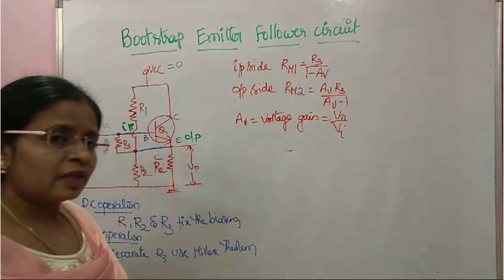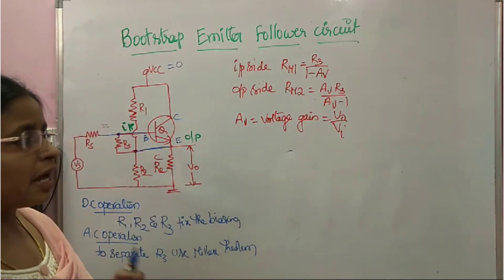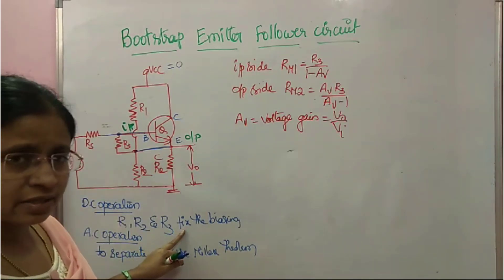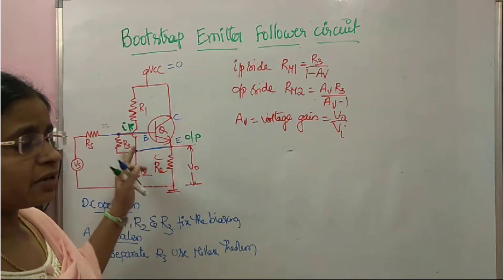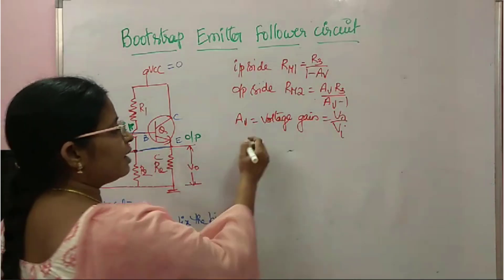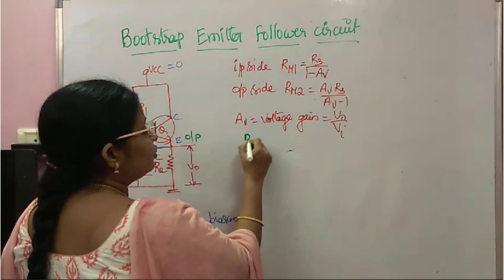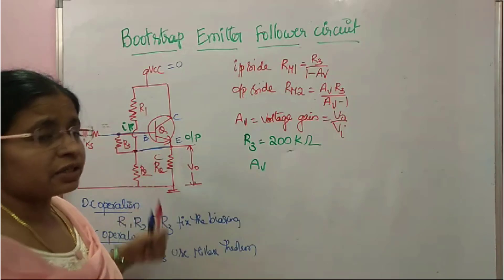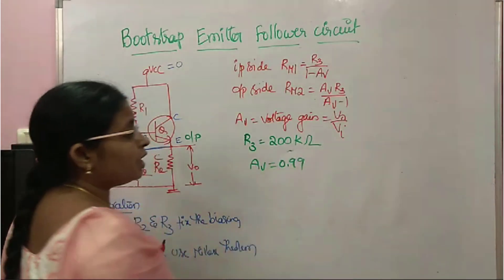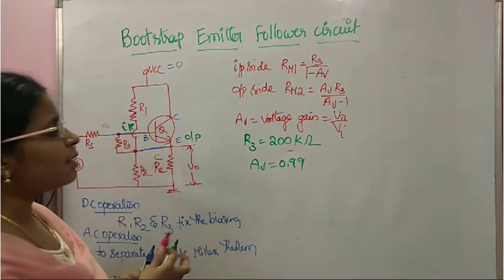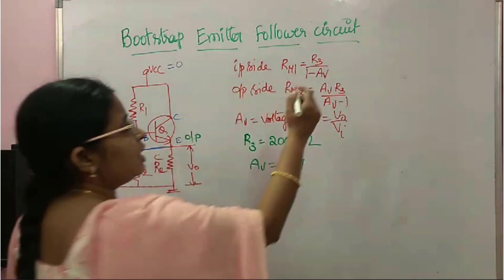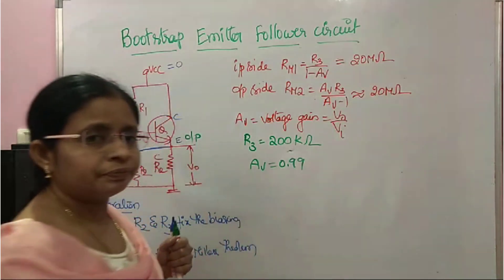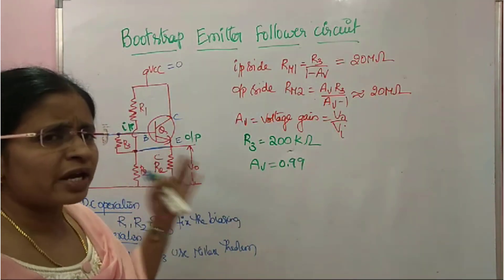Now, to prove that the circuit has high input impedance: let's take R3 = 200 kΩ, and since this is a CC configuration the voltage gain approaches 1 — let it be 0.99. Substituting these values into Rm1 = R3 / (1 − Av), Rm1 becomes approximately 20 MΩ. A resistance of 20 MΩ is very high.